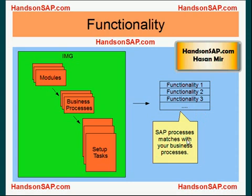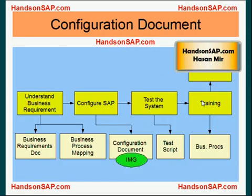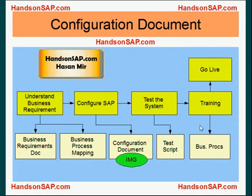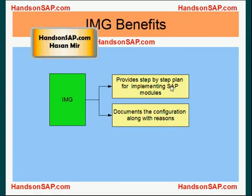Once you have performed all these setup tasks, you get your desired functionality from your software. That means your SAP business processes now start working the way you wanted them to, or they now match your actual business processes. Under the configuration part, you need to create a document called a configuration document, which lists all the steps needed to achieve the desired configuration.